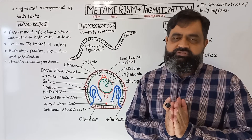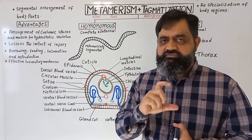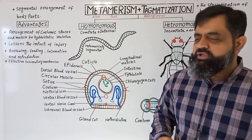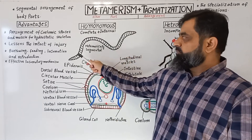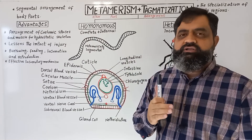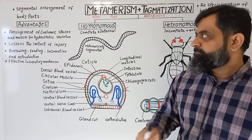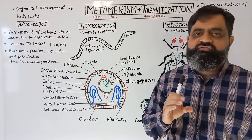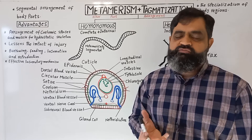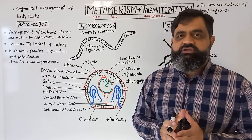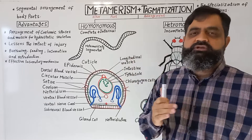Why has metamerism taken place? Instead of a single complete body, the body has been divided into different parts. There are different theories and advantages for this. The first advantage of metamerism is the arrangement of coelomic spaces — dividing the body into different compartments, each segment filled with coelomic fluid, along with muscles, which help in the formation of a hydrostatic skeleton. This hydrostatic skeleton, produced by the coelomic fluid pressure, helps in better locomotion, burrowing activity, and undulating movement produced by these animals. So this segmentation — metamerism — helps in locomotion.